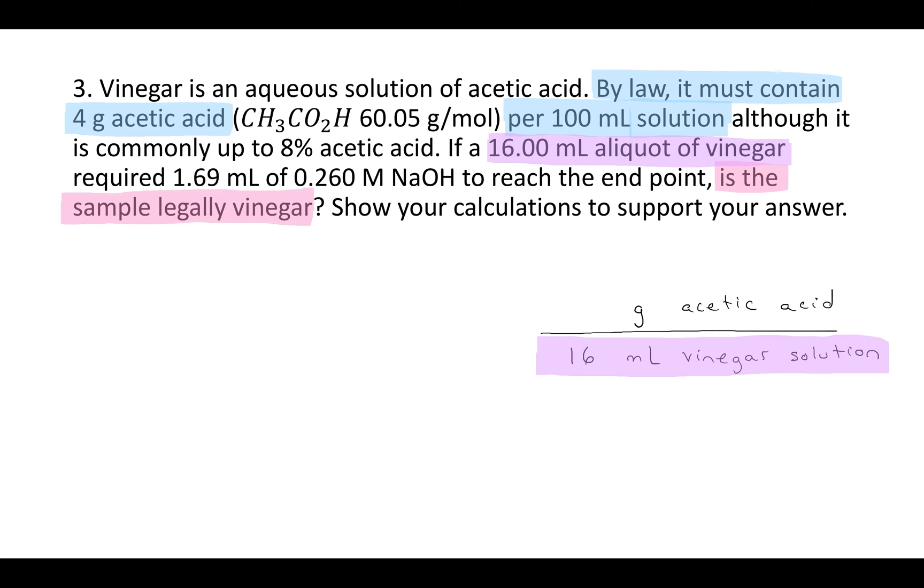The first number we run into, 16 milliliters, milliliter aliquot of vinegar, that's the milliliters of the vinegar solution. So that's 16 in the denominator right there. Now we just need to figure out the grams. So they give us 1.69 milliliters of sodium hydroxide. They give us that that solution is 0.26 molar NaOH, and remember that molarity is moles per liter. So that's really 0.26 moles of NaOH in every 1 liter.